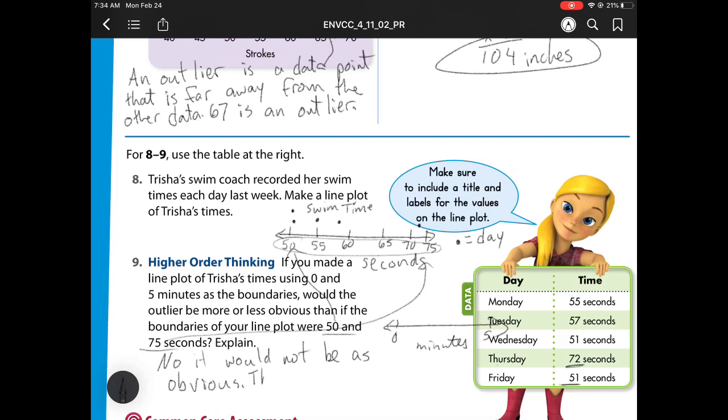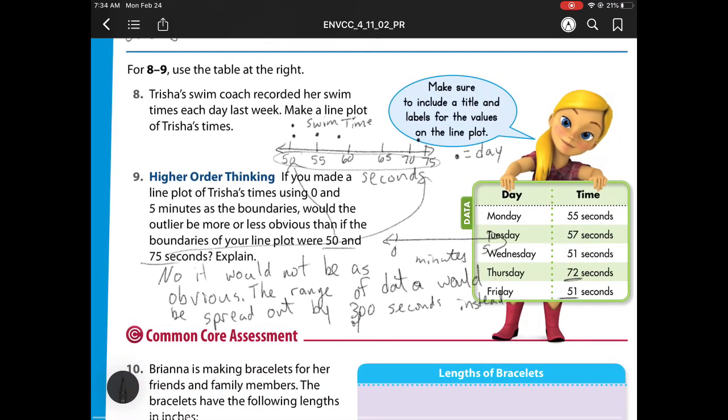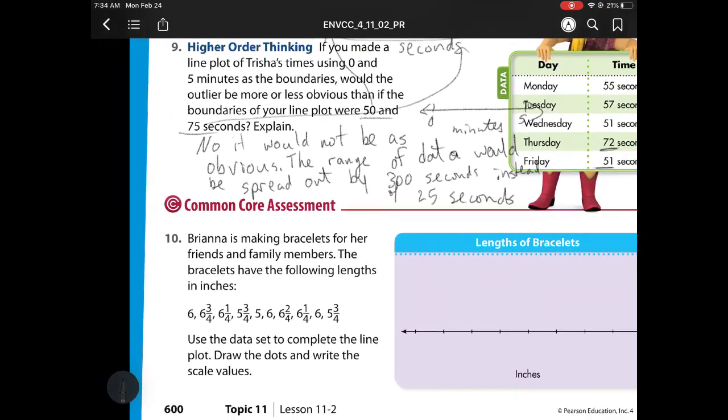But now my biggest range would be 5 minutes, which is the same as 300 seconds. So I'm going to put the range of data would be spread out by 300 seconds instead of 25 seconds. So that means all these dots are actually going to appear closer together because there's more numbers that I'd be looking at.